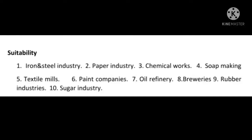Suitability — industries where Process Costing is used: Iron and Steel Industry, Paper Industry, Chemical Works, Shipping, Textile Mills, Paint Companies, Oil Refinery, Breweries, Rubber Industries, and Sugar Industry. This covers the suitable industries for Process Costing.